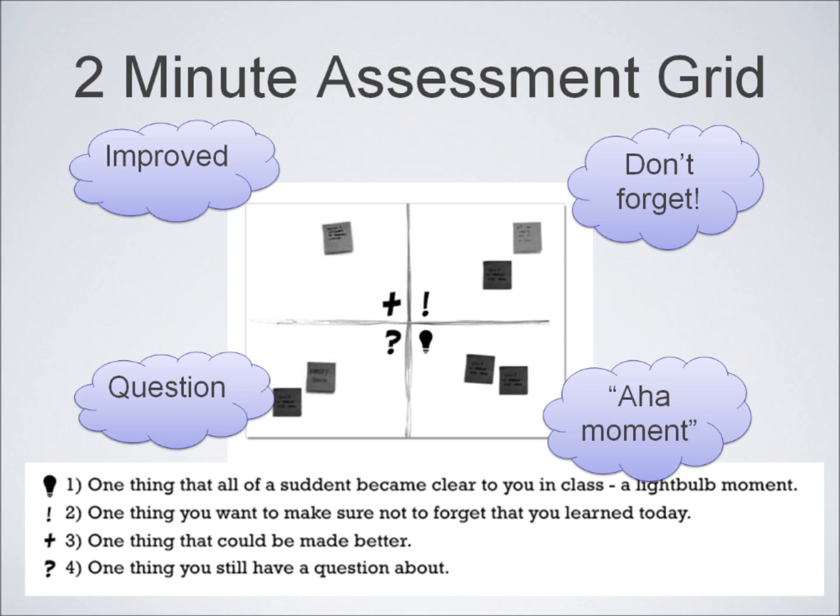Or try this two-minute assessment activity. Each student is given a post-it note and asked to write one of the following on it: one thing that could be made better, one thing that you don't want to forget that you learned, one thing that suddenly became clear to you, a light bulb moment, or one thing you still have a question about. The students then place their post-it notes in the requisite quadrant of the grid, potentially as they leave the room.